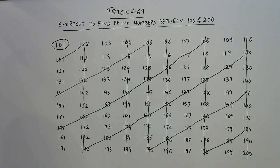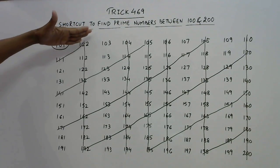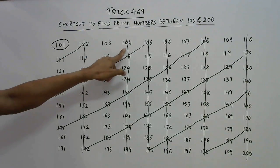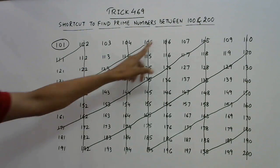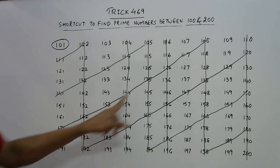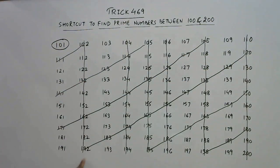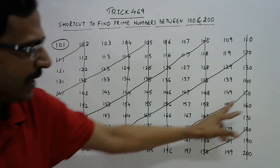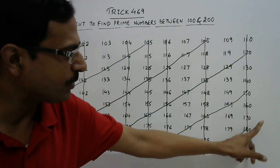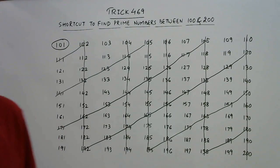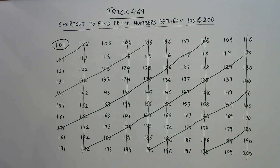We have now drawn diagonals starting from 102 and coming downwards. Then leave two numbers, draw another diagonal; leave two numbers, another diagonal; leave two numbers, another diagonal; leave two numbers, another diagonal. When leaving two numbers yields nothing remaining, we stop. Many more numbers are now struck off.